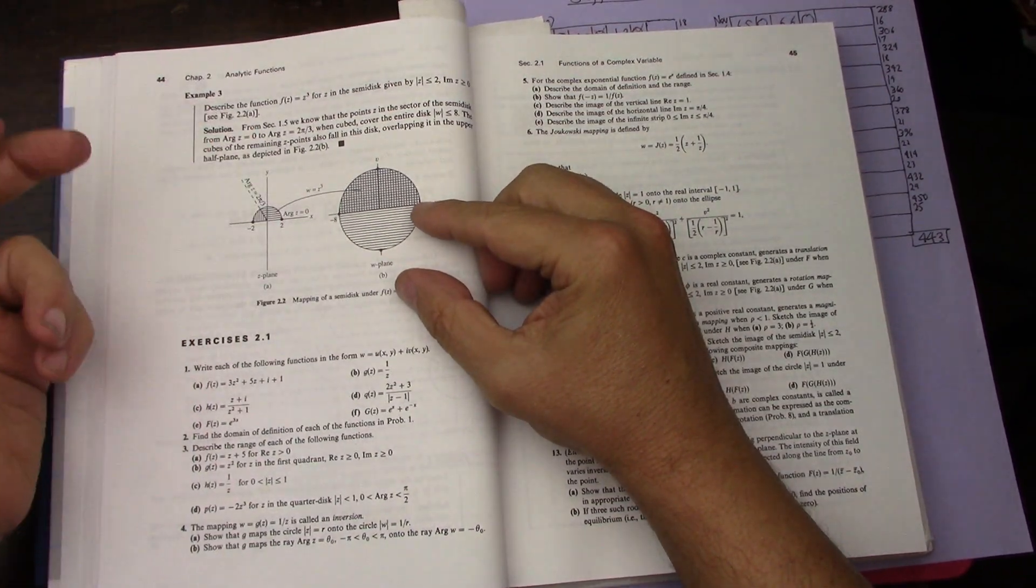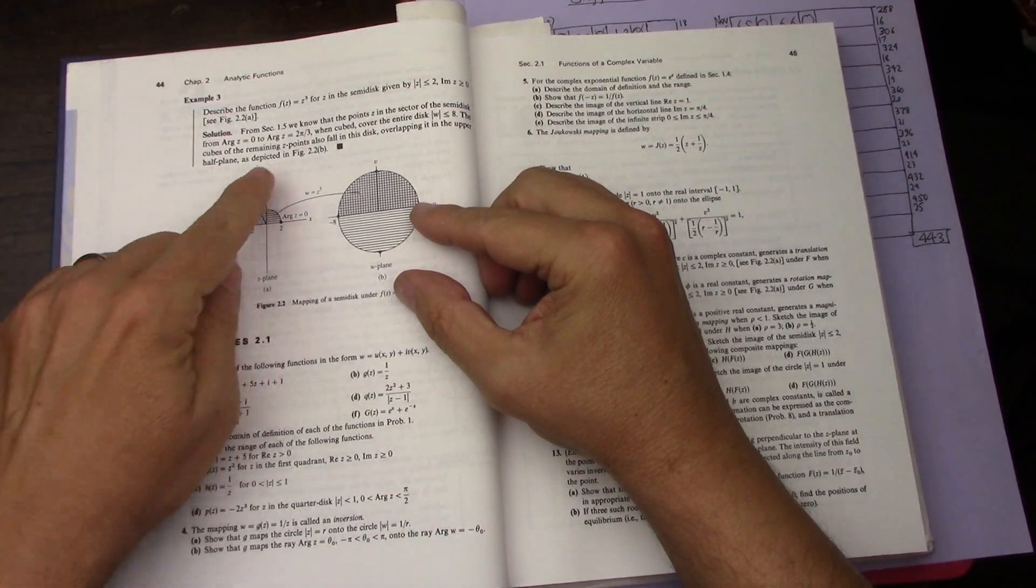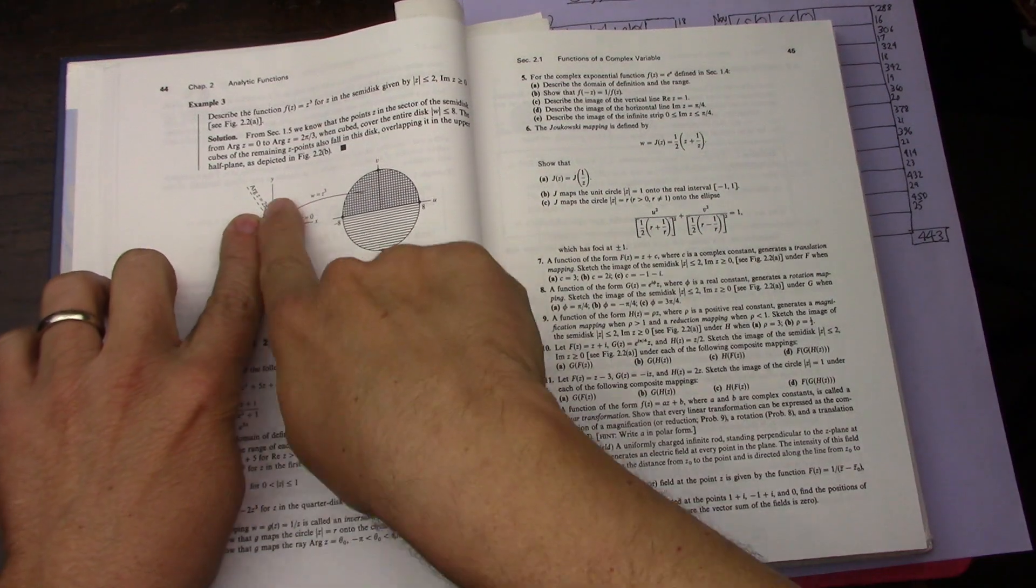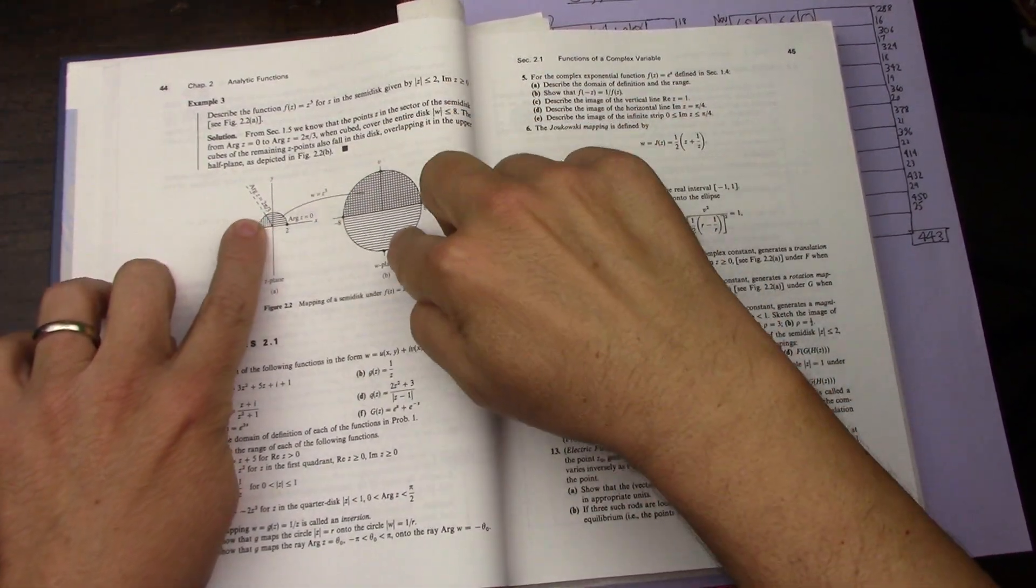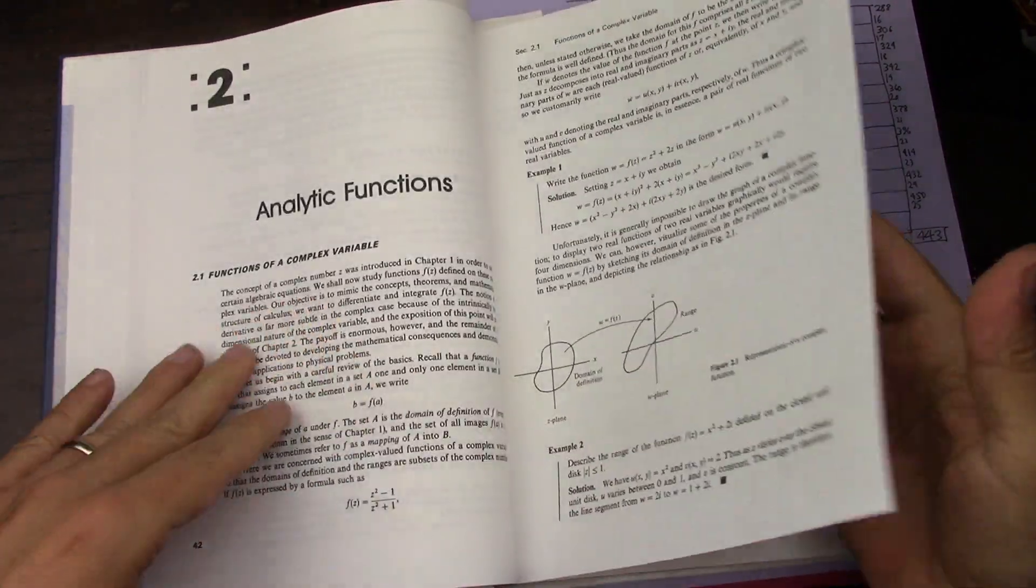When you go from the argument 0 to 2 pi over 3, if you're cubing it, you're really doing 0 to 2 pi. So really, this particular chunk maps to the whole sphere, and then the rest of it maps to the top. I'm getting it now, so arguments.